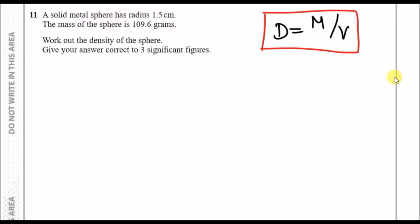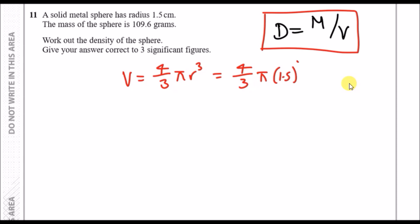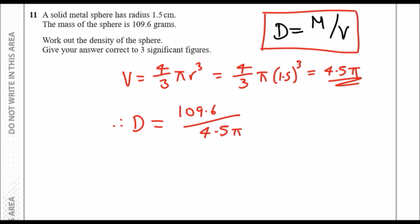It says sphere, and we know spheres are basically a giant ball to summarise it. The sphere volume formula is actually given at the beginning of the booklet and looks like this: four-thirds times pi times r cubed. So this is the one we have to write down, and here you just need the radius which is 1.5. Plug into your calculator: four-thirds times pi times bracket 1.5 close bracket cubed, and you should get exactly 4.5 pi. I recommend you leave it in pi form for now. Therefore the density equals the mass, which is 109.6, divided by 4.5 pi.